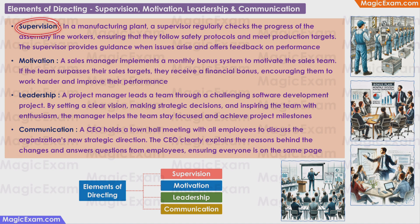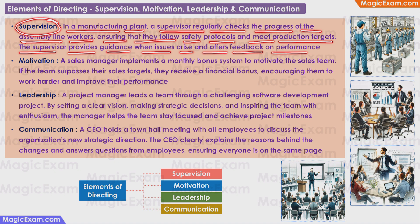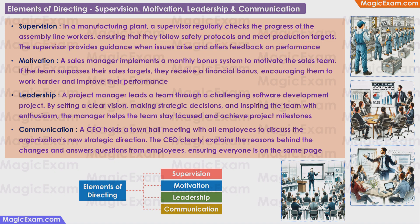What is supervision? Suppose in a manufacturing plant, a supervisor regularly checks on the progress of the assembly line workers. He ensures that they are following all the safety protocols and meeting the production targets. The supervisor also provides guidance whenever any issues arise and offers feedback on the performance of the workers. This is an example of supervision.